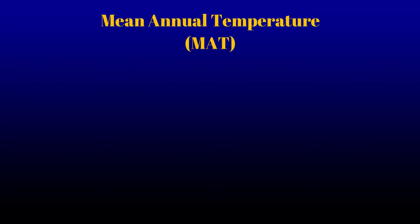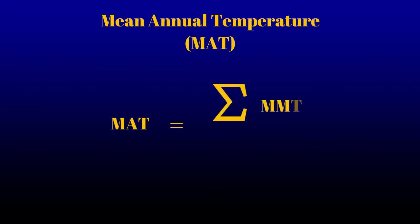Then you can calculate the mean annual temperature, which is summing all the mean monthly temperatures and dividing by 12.